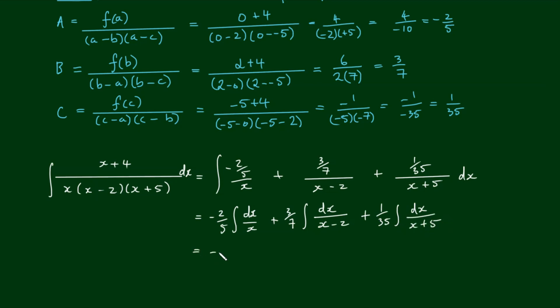This gives us negative two-fifths by the natural log of x plus three-sevenths by the log of x minus 2 plus one thirty-fifth by the log of x plus 5. Because this is an indefinite integral, we include a constant of integration d. So the integral of x plus 4 over x cubed plus 3x squared minus 10x equals negative two-fifths log x plus three-sevenths log of x minus 2 plus one thirty-fifth log of x plus 5 plus d.